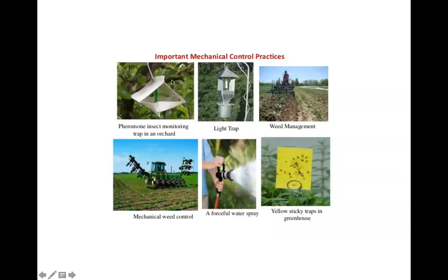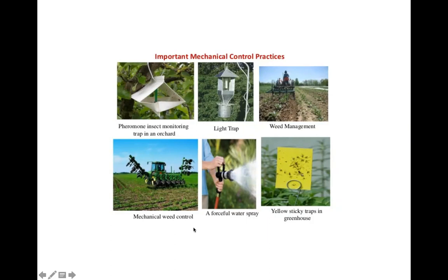Important mechanical control practices include pheromone insect monitoring traps in the orchard, light traps, weed management — because some insects in the off-season go on alternate crops like wheat beside the field, so wheat should also be managed — mechanical weed control, forceful water spray, and yellow sticky traps in the greenhouse.